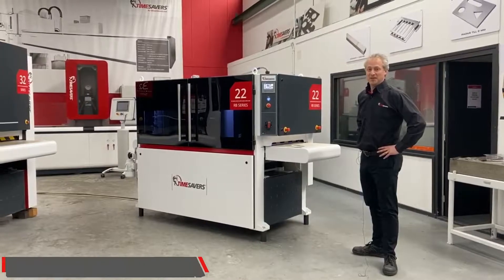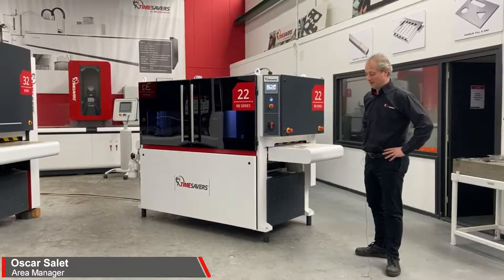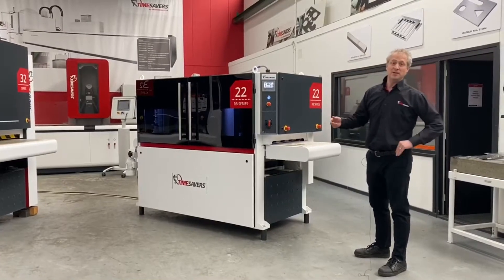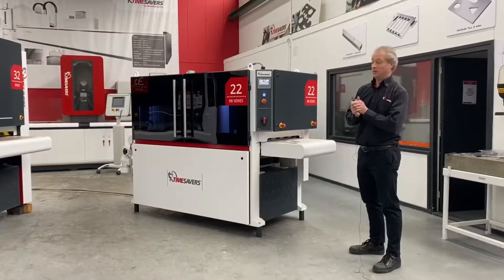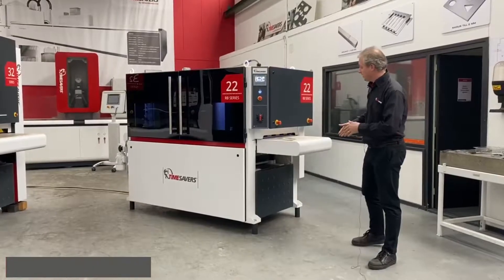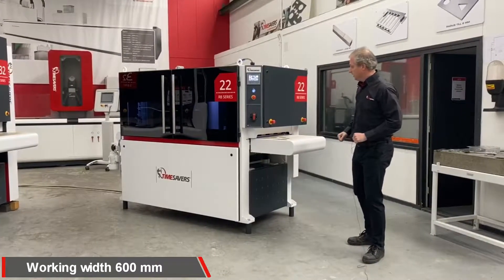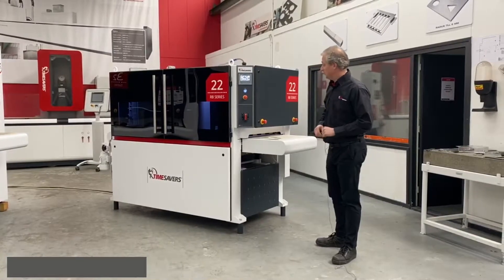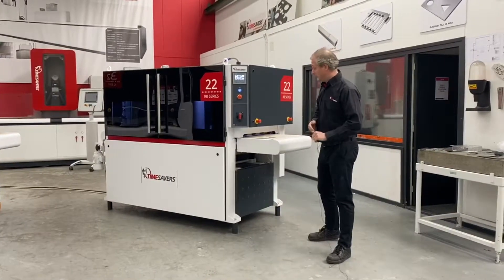Hi folks, I'm Oscar Salet from Time Savers in the Netherlands. Today I want to show you the 22 series WRBW. It's a 600 millimeter wide machine with three grinding hats. A new model and we hope you're gonna like it.